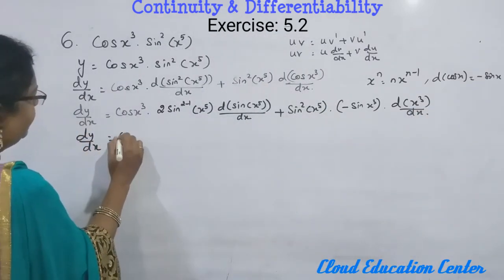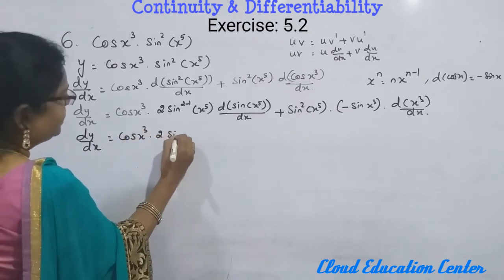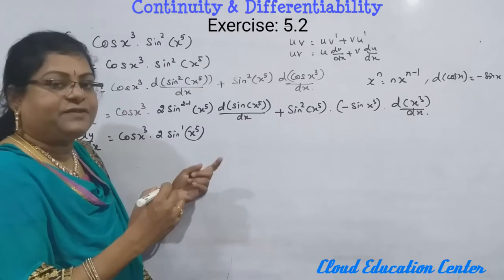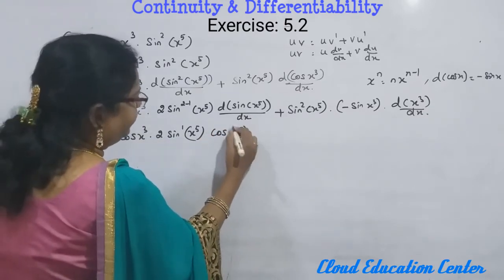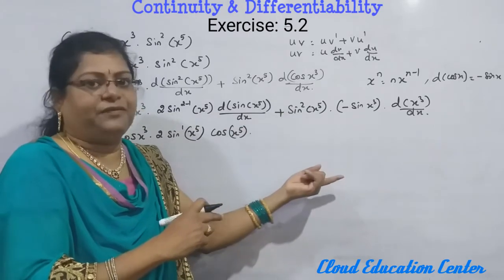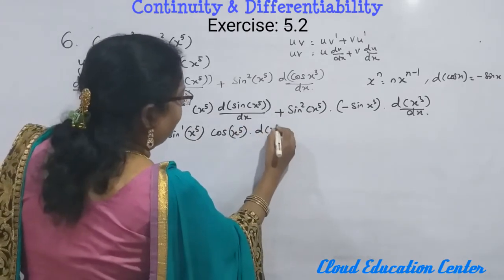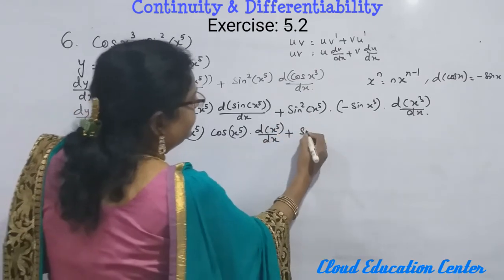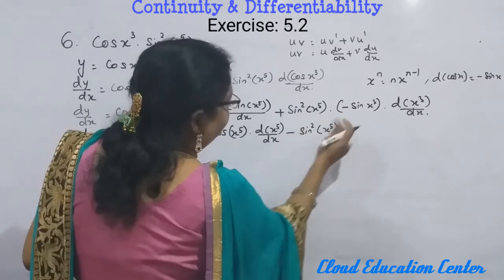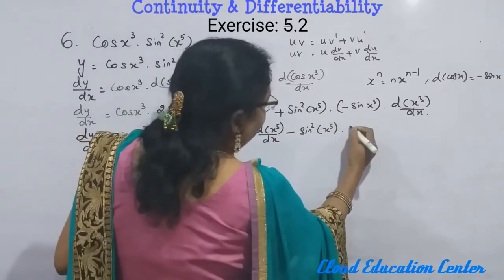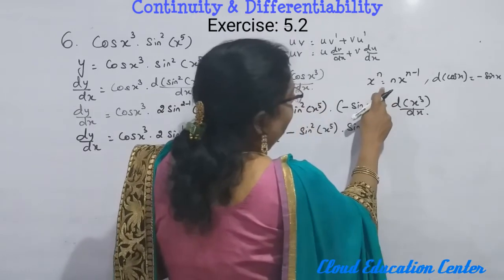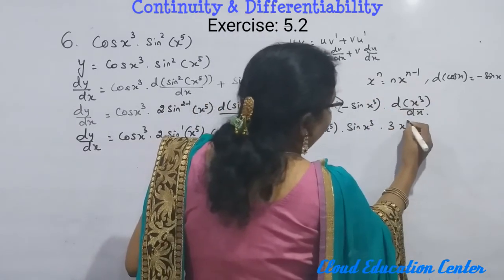dy/dx equals cos(x³) into 2·sin(x⁵) — since 2 minus 1 is 1, we write simply sin(x⁵). Now differentiating sin gives cos, so cos(x⁵). Since we have x⁵ not just x, we apply the chain rule again: differentiation of x⁵ gives 5·x^(5−1). Plus for the second term: we bring the minus in front, so minus, and sin(x³). Differentiating x³ using x^n = n·x^(n−1) gives 3·x^(3−1) = 3x².